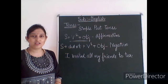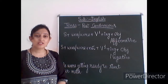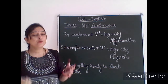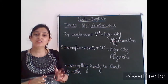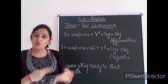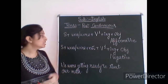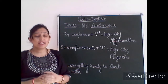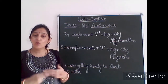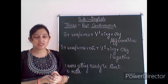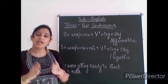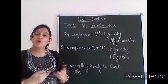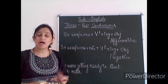Now let's move to the second type: past continuous. This category denotes an action that was going on at some point or time in the past, and it expresses an action continuing over a period of time, especially in the past. This is the past continuous tense.